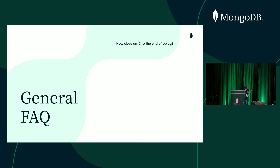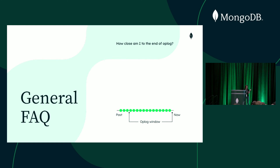Some general questions we hear often: how close am I to the end of the oplog? Because we read from the oplog, we need to know if we are close to falling behind. If we had an outage, we need to resume from a day back and know those events are available. If you're using Atlas, Ops Manager, or Cloud Manager, there are monitoring tools that can alert about the oplog window. You can also just query the oplog collection, see what your earliest and latest event times are, and compare them to figure out whether you'll be able to keep up.